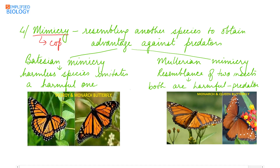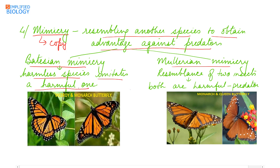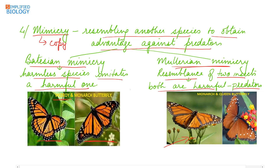Last is mimicry — resembling another species to obtain an advantage against predators. Two types are Batesian mimicry and Müllerian mimicry. In Batesian mimicry, a harmless species imitates a harmful one to avoid predators — for example, the viceroy butterfly resembles the highly distasteful monarch butterfly so predators avoid it. In Müllerian mimicry, two harmful insects resemble each other for mutual benefit — once a predator attacks either member, it discovers its unpleasant taste and avoids both species.